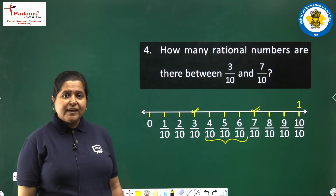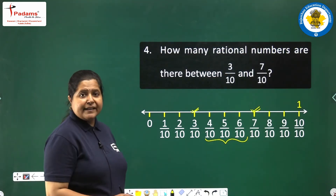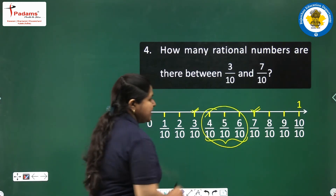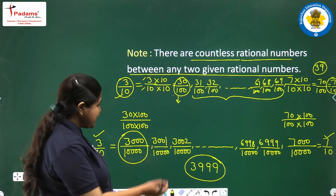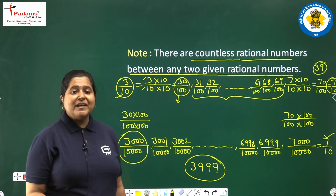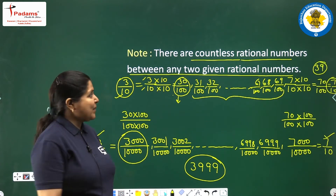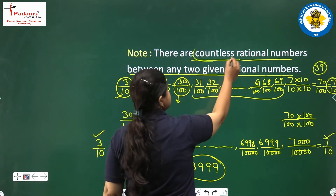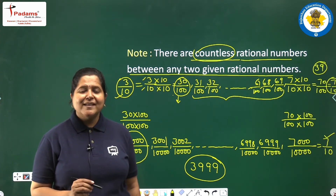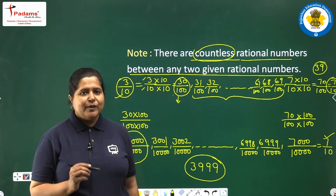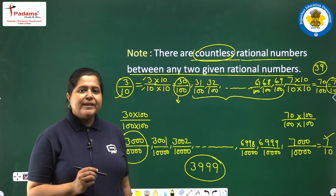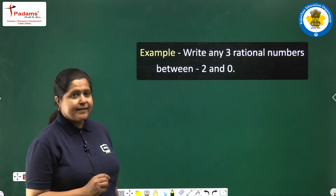Originally, on seeing the number line, we thought there were only 3 rational numbers in between, but now you can see how many numbers there are, and still there can be many more. So always remember: there are countless, or infinitely many, rational numbers between any two given rational numbers. Now we will be doing some questions involving this discussion.